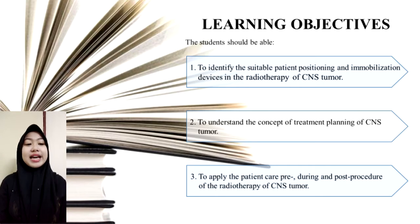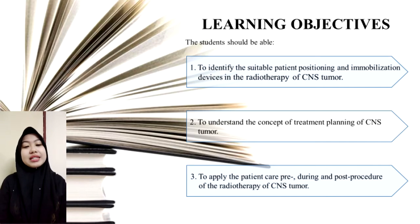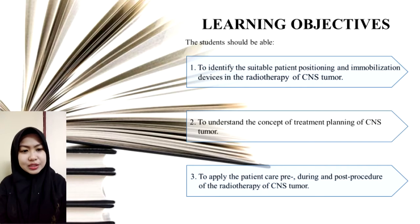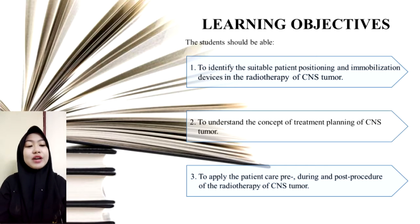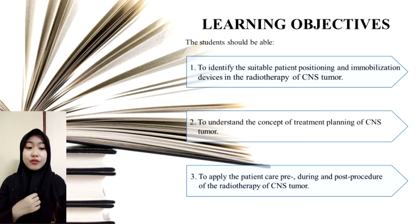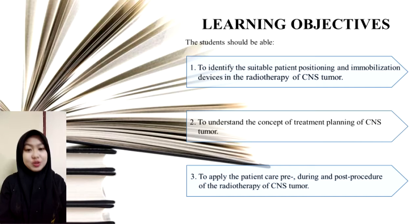This means that the student can give a reason. For example, in the CSI technique, the prone position is suitable for cooperative adult patients. This position also allows direct radiation to the posterior spine as well as the field junction. In terms of immobilization device, a prone base plate is used because the angulation is needed to avoid beam divergence to the mandible, which is a critical organ. Therefore, the student should be able to identify the suitable patient positioning and immobilization device and provide reasoning.